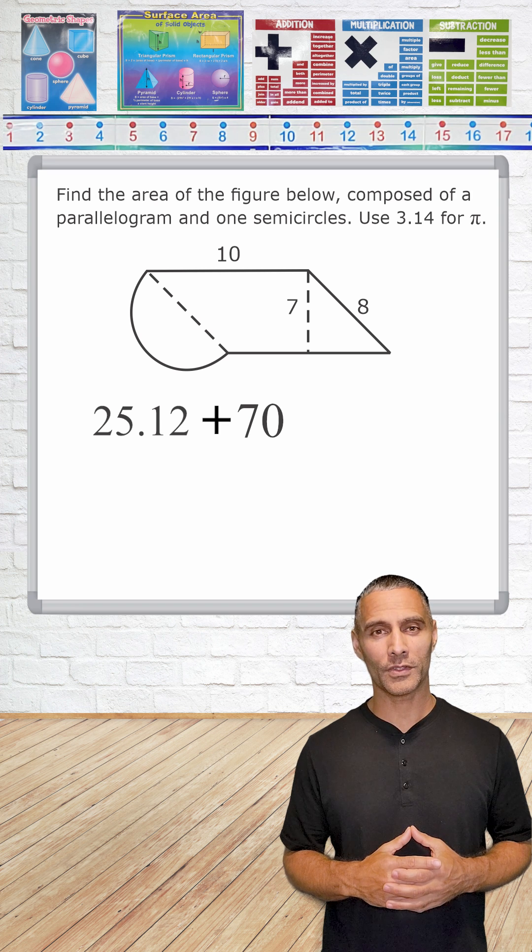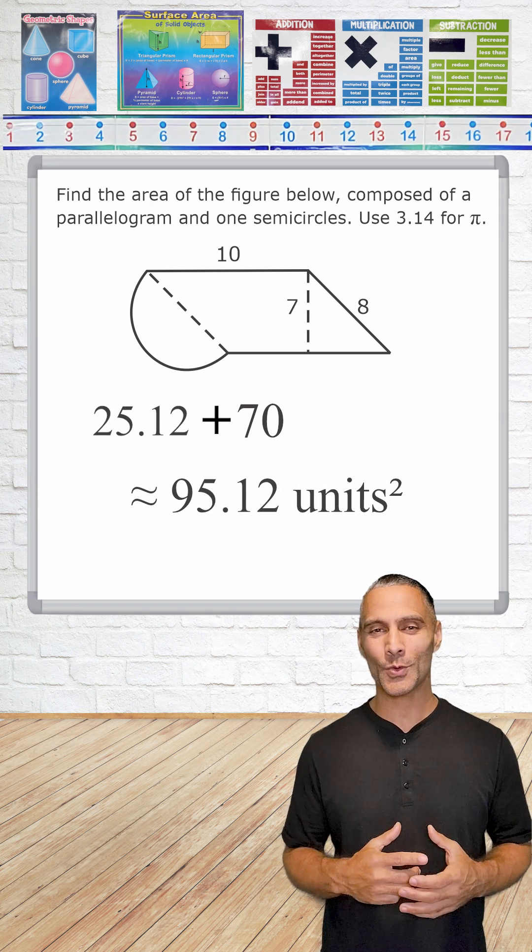70 plus 25.12 is a total of 95.12 square units.